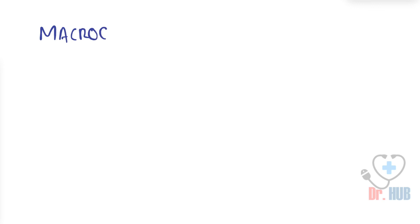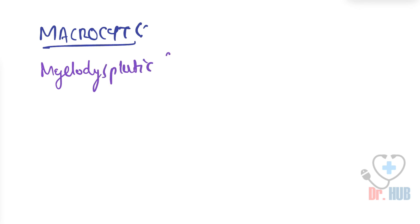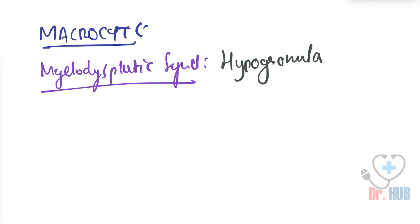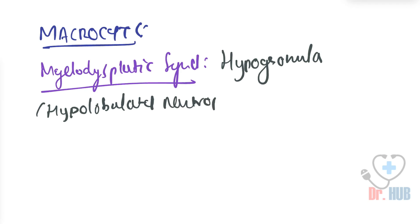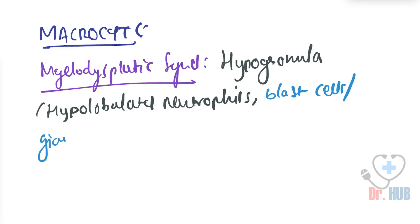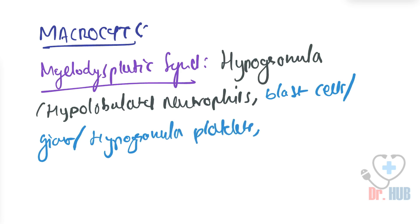Moving on to macrocytic anemia, we first look at myelodysplastic syndrome (MDS). In MDS, the peripheral blood smear shows hypogranular or hypolobulated neutrophils, blast cells, giant or hypogranular platelets, and Pappenheimer bodies.